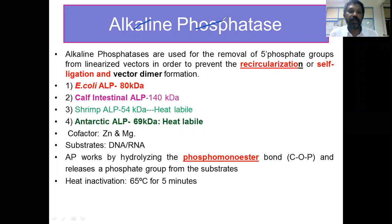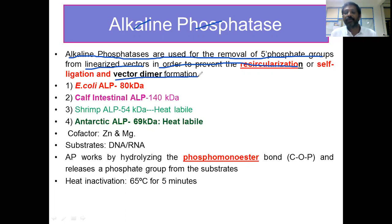Let us look into the role of alkaline phosphatase in DNA cloning. Alkaline phosphatases are used for the removal of 5-phosphate groups from linearized vectors in order to prevent recircularization or self-ligation and vector dimer formation.